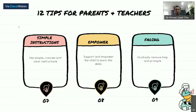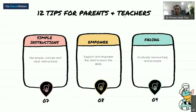Tip number seven: use simple instructions — only two or three words. For example, 'let's eat' or 'wash your hands.' Use very simple, concise, and clear instructions. Don't use complicated words.